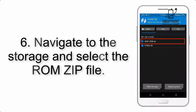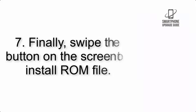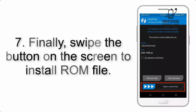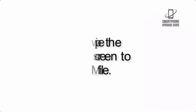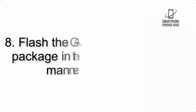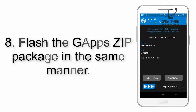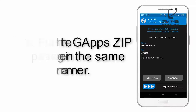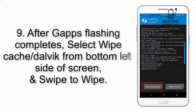Step 5: Go back to the recovery main screen and tap on the Install button. Step 6: Navigate to the storage and select the ROM zip file. Step 7: Swipe the button on the screen to install the ROM file. Step 8: Flash the GApps zip package in the same manner.